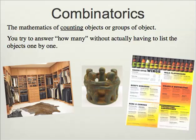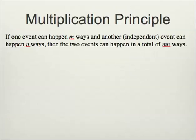The basic principle is the multiplication principle, which is at the heart of the way we do everything else. If one event can happen M ways and another independent event can happen N ways, then the two events can happen in a total of M times N ways. Independence is a key aspect of this — it just means that choosing one thing does not affect whether or not you choose another. They're equally likely whether you choose the first event or the second event; it doesn't really matter.